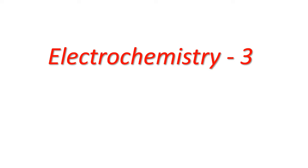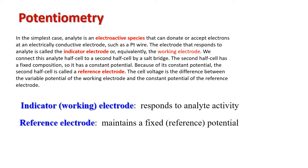We are coming to chapter electrodes and potentiometry. We'll look at reference electrodes and indicator electrodes. In the simplest case, analyte is an electroactive species that can donate or accept electrons at some electrically conductive electrode, for example, at a platinum wire. The electrode that responds to analyte is called the indicator electrode or equivalently working electrode.